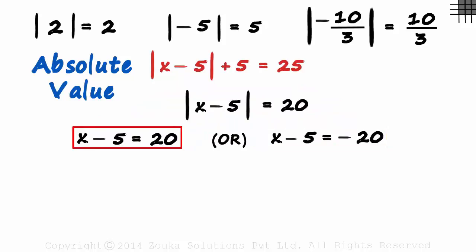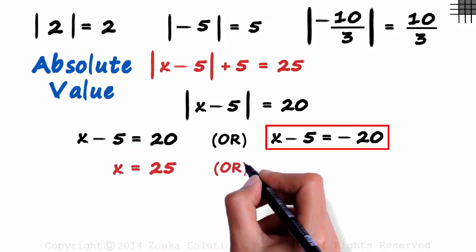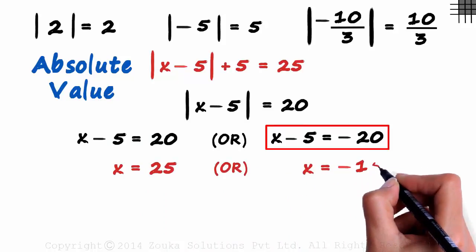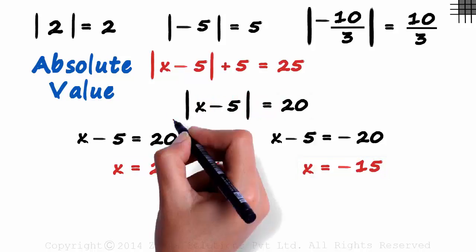Based on this equation, we get x as 25 and based on this one, we get x as minus 15. We got two values for x. To know if both these values are correct, let's try substituting them in place of x and see if we get 20. We are looking at this equation now.